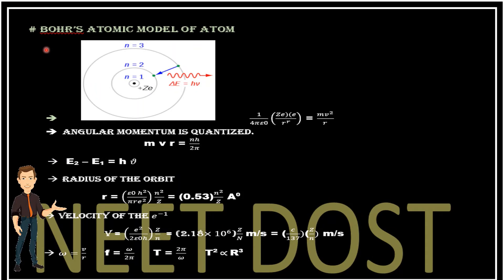Another important topic is Bohr's atomic model of the atom. Here we have a nucleus with atomic number z, an initial orbital n₁, another orbital n₂, and another with n = 3. When an electron jumps from a higher state to a lower state, or vice versa, there is a change in energy given as hν. Bohr's first postulate is: (1/4πε₀)(ze²/r²) = mv²/r, where mv²/r is the centripetal force and the left side is the electrostatic force.